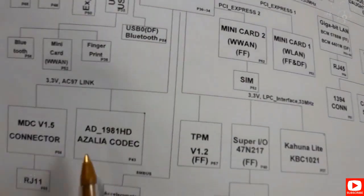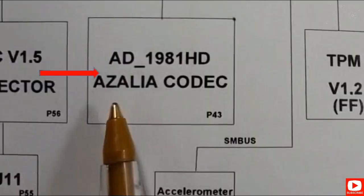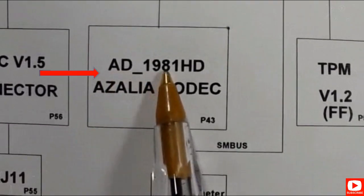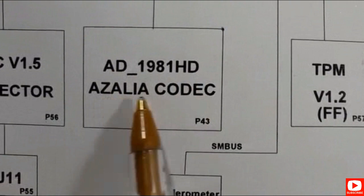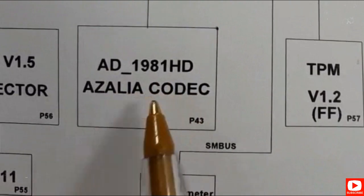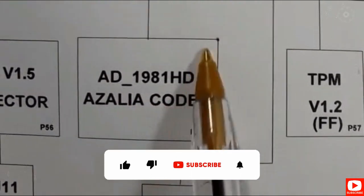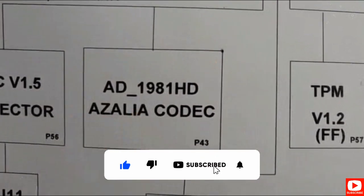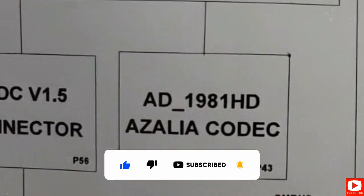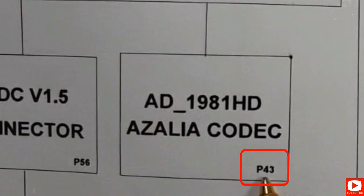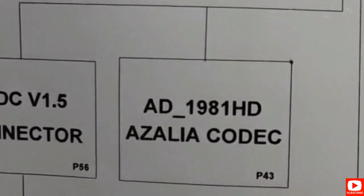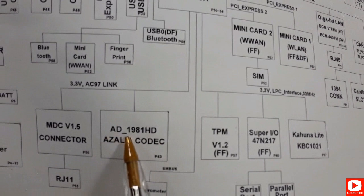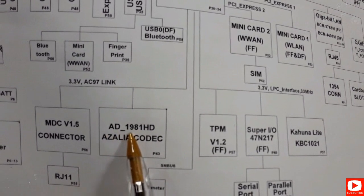For example, here we have the Azalea codec. This is basically an IC. Its reference is AD1981HD, and it exists on page 43 — P43 means page 43.